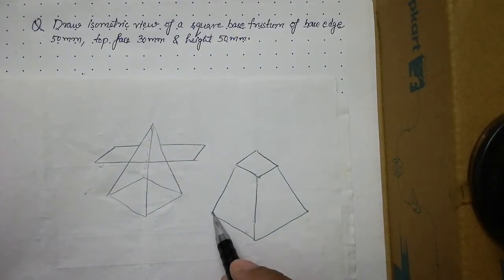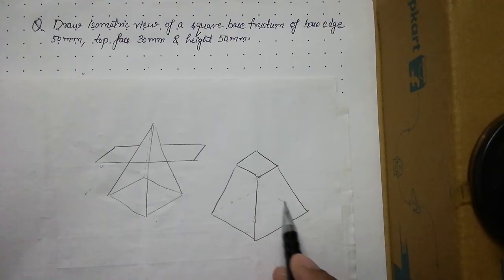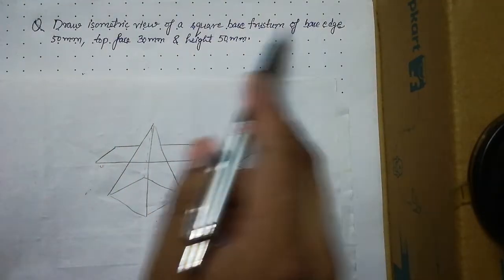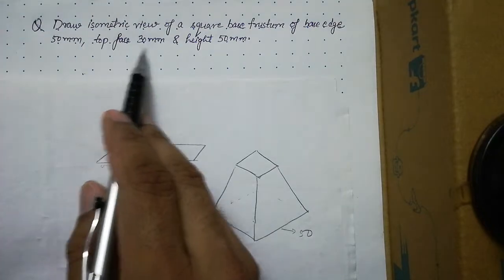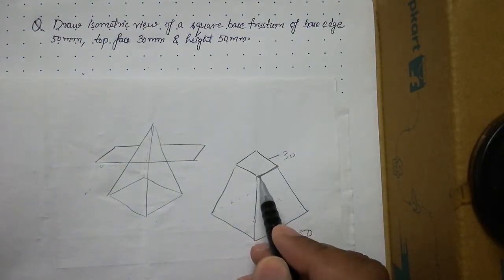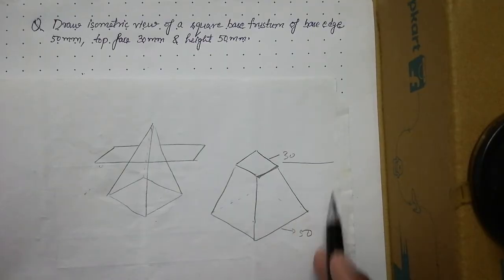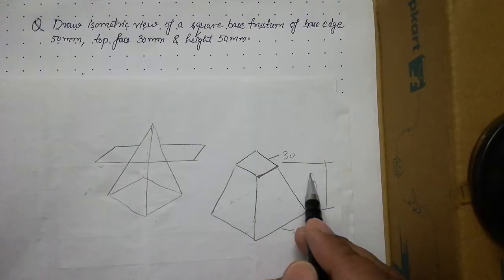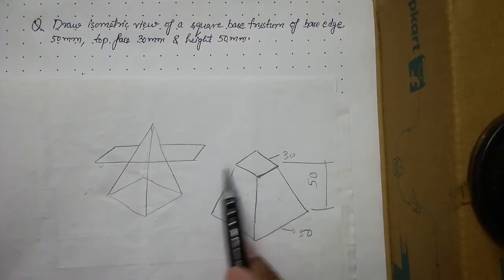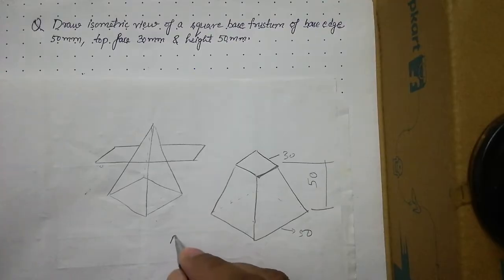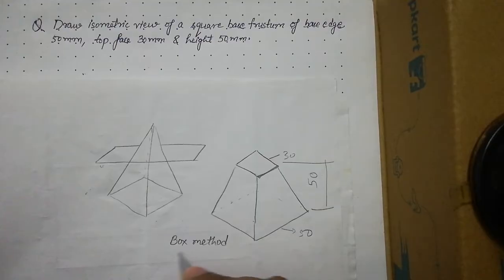In this problem, the base edge is 50 mm, the top face edge is 30 mm, and the height is 50 mm. To draw such solids we follow the box method, which we learned in the previous lecture related to the cone frustum.